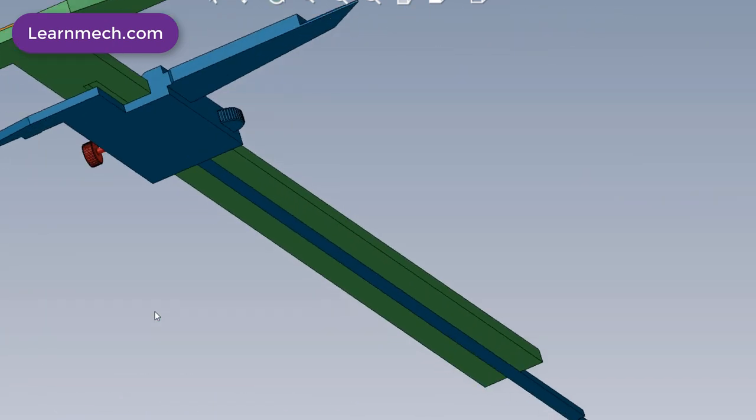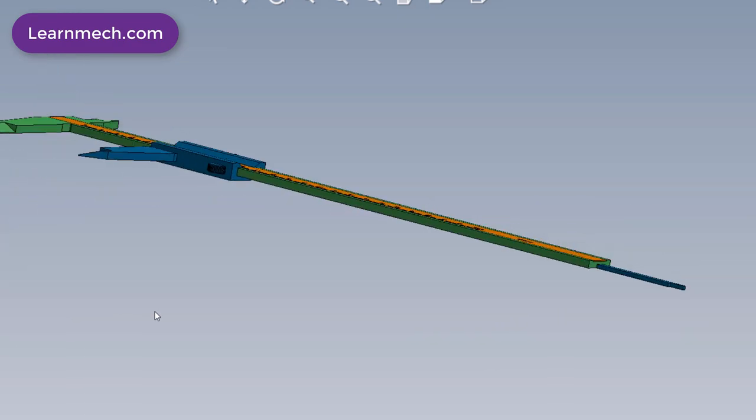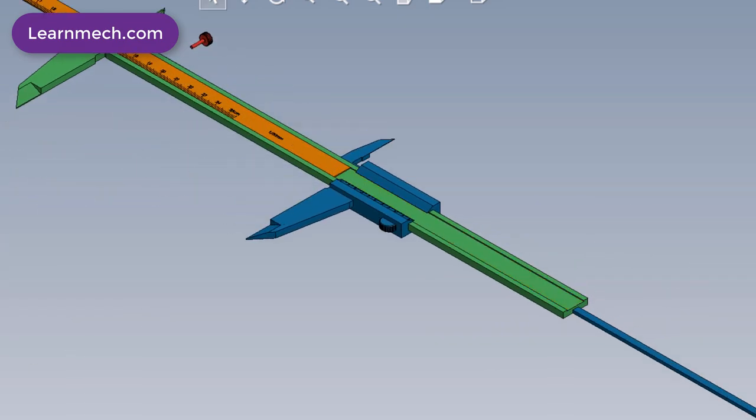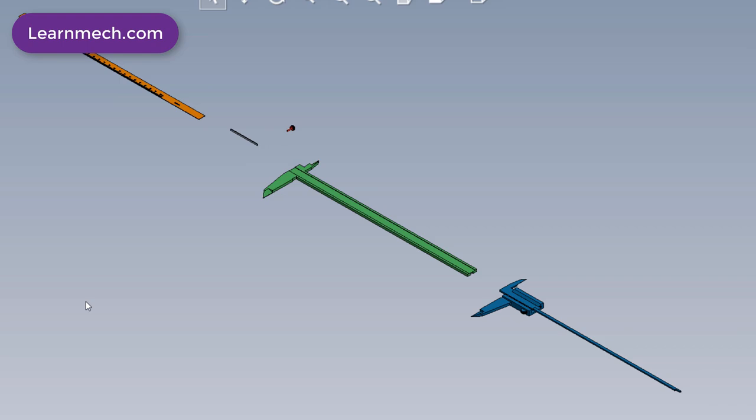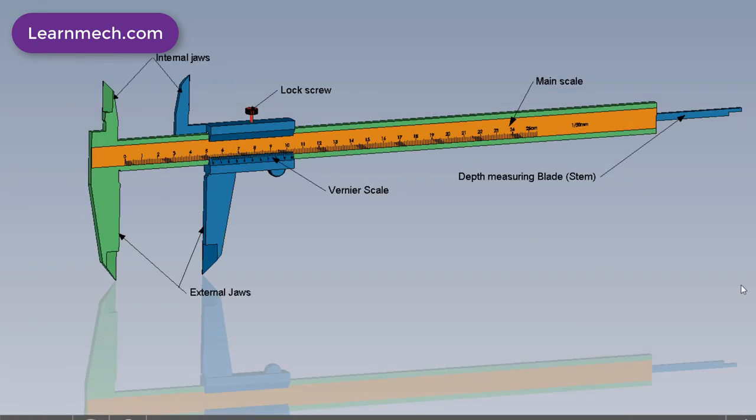The main scale has the normal resolution with a one division value of 1 mm. The Vernier scale is attached with the main scale which can slide on it and has 50 divisions on it.